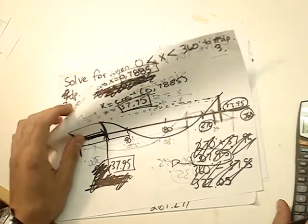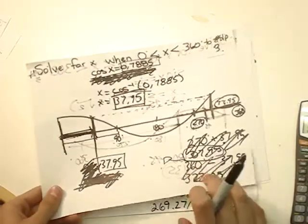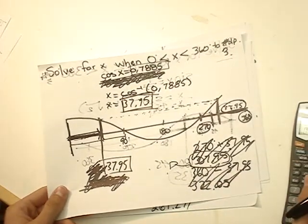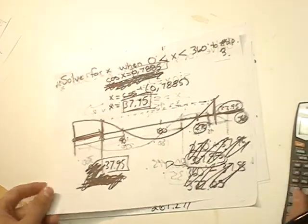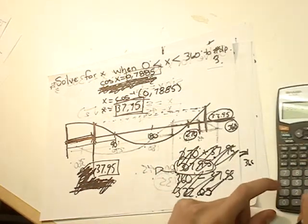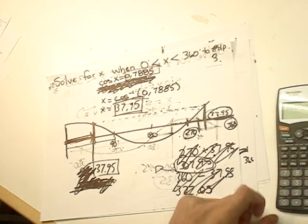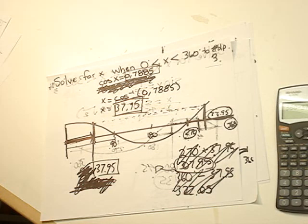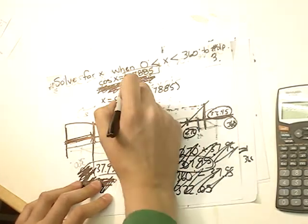I'm not going to bother to go through and tell you what you're going to get. Actually, I will. So if we do 360 minus 37.95, you get 322.05. Go through, do the cosine of that. You will, or you should, get 0.7885.